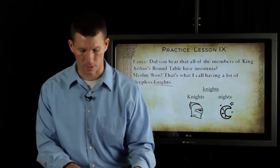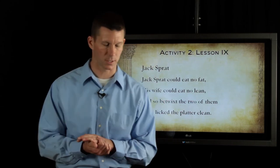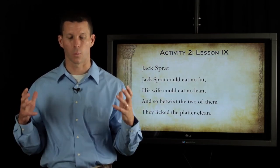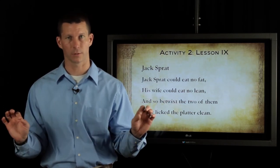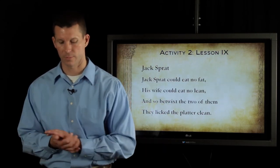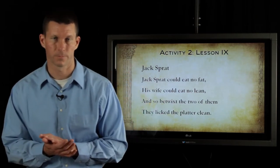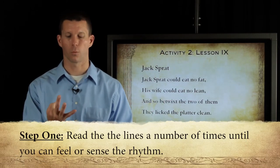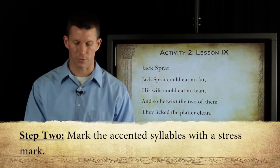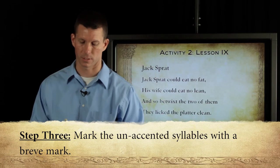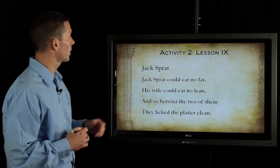We're going to practice our scansion again, because this is such an important skill to have down. There's continuity throughout the next few lessons so that what we've learned — when it comes to meter, measuring a line of poetry, putting in our stresses and our breathes — we don't lose those skills. Let me review the three steps to scansion. One: read the poem quietly to yourself and figure out where you should bob your head. Number two: put in your stresses. Number three: put in breathes over all of the rest of the syllables that are there.